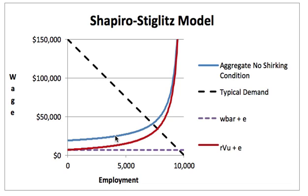If you took the expectation of those job rents over the lifetime of the worker — knowing that the worker is going to separate with a certain rate that was called b in the paper — that expectation would be the value of a worker who is currently putting forth effort. That is, it would be the difference between VE and VU. That's what the integral would be. This picture is showing the flow difference between being employed and being unemployed.